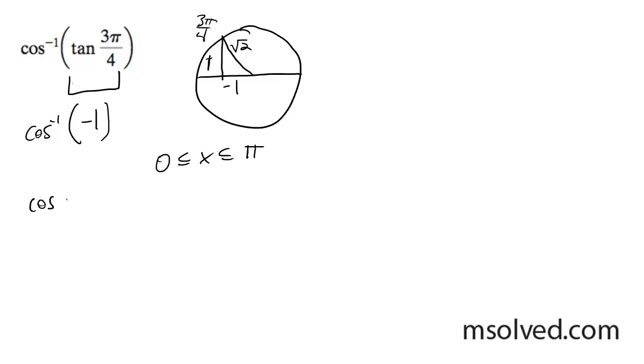So I can rewrite this as cosine of x is equal to negative 1. Where is cosine equal to negative 1? At π, so negative 1 over 1, so x is just going to be simply equal to π in this case. That's it.